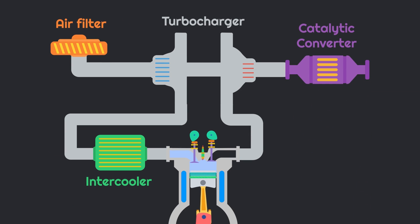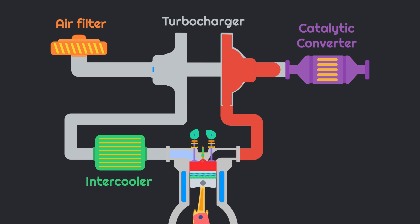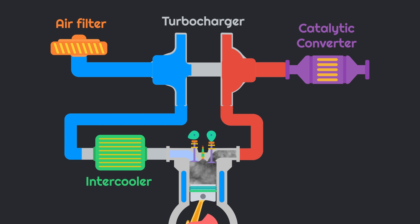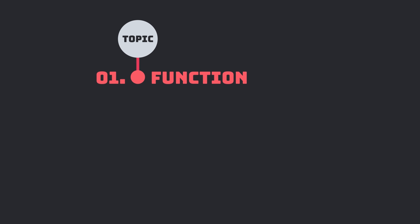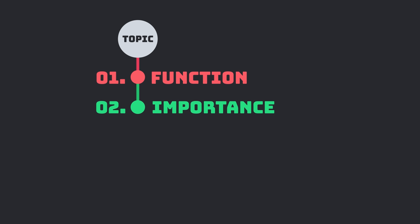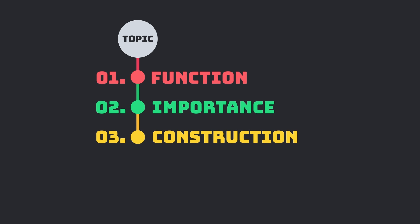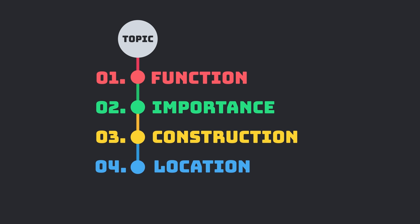In the previous video, we have seen the working of a turbocharger. In the circuit of turbocharger, there is a component called intercooler. So today, we will cover the fundamentals of intercooler including construction and its location. We will discuss the function of intercooler, then the importance of it, then the construction, then the location and circuit of intercooler, and we will end the video with the working of intercooler.